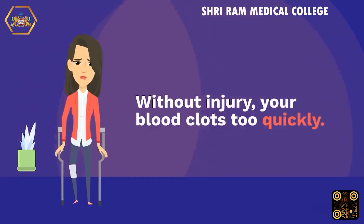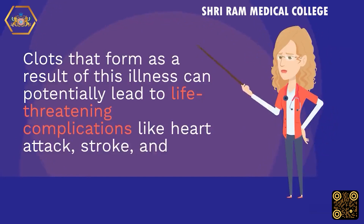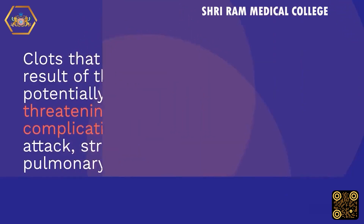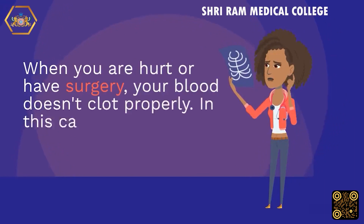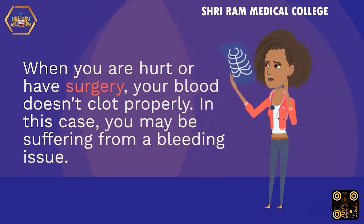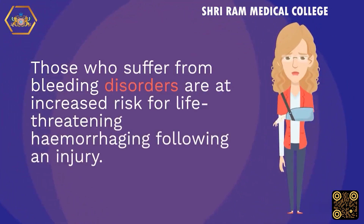Without injury, your blood clots too quickly. Clots that form as a result of this condition can potentially lead to life-threatening complications like heart attack, stroke, and pulmonary embolism. When you are hurt or have surgery and your blood doesn't clot properly, you may be suffering from a bleeding issue. Those who suffer from bleeding disorders are at increased risk for life-threatening hemorrhaging following an injury.